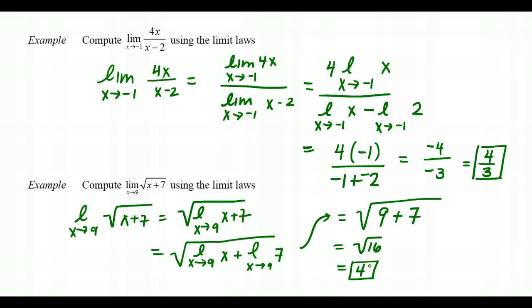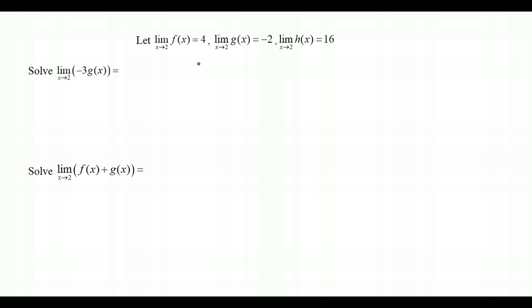We've now applied almost all the limit laws. The next examples are different: we're given that the limit as x approaches 2 of f(x) = 4, the limit as x approaches 2 of g(x) = -2, and the limit as x approaches 2 of h(x) = 16. Using this information, we apply the limit laws to evaluate expressions involving these generic functions — similar to how the laws themselves were presented.